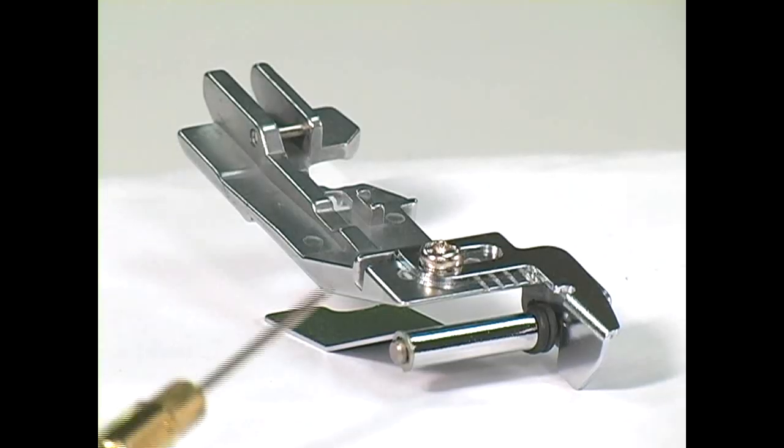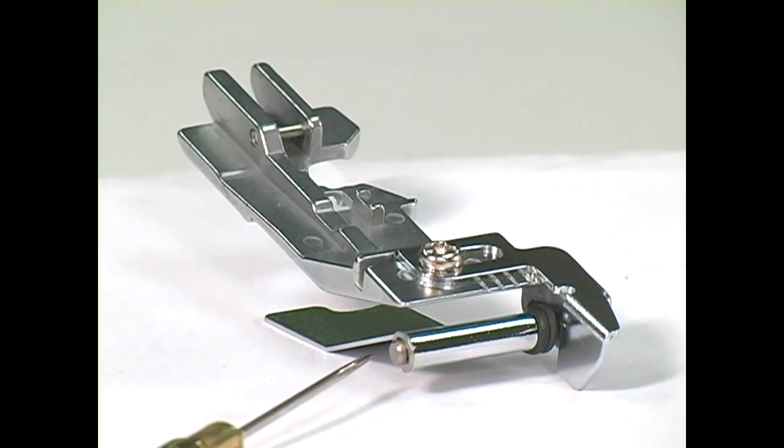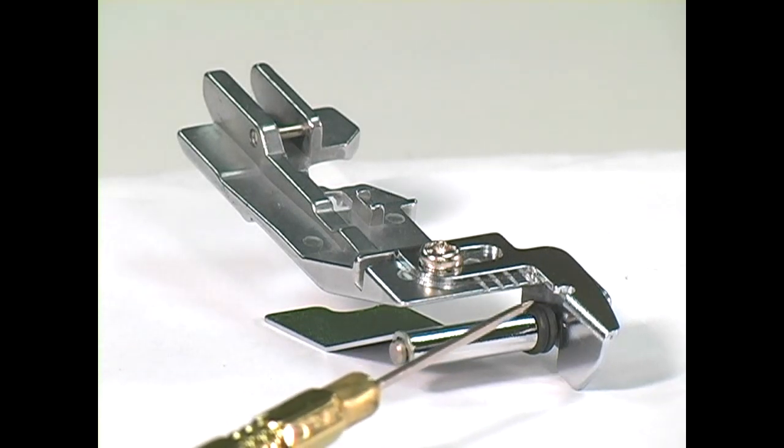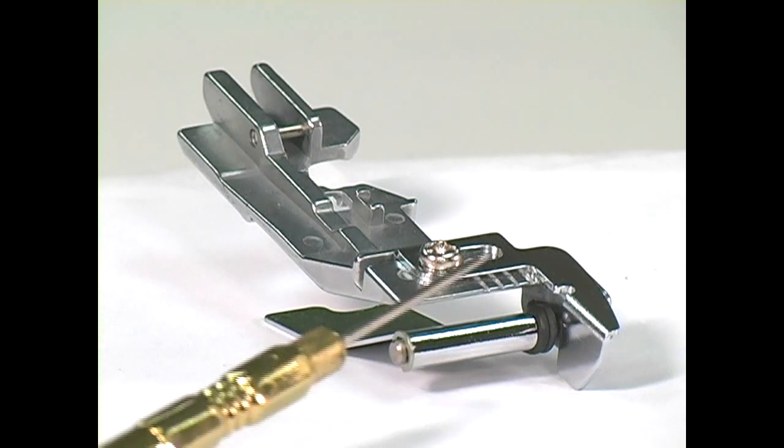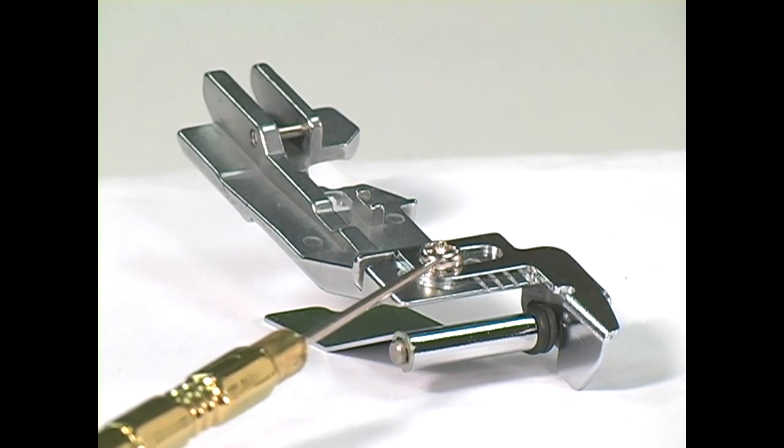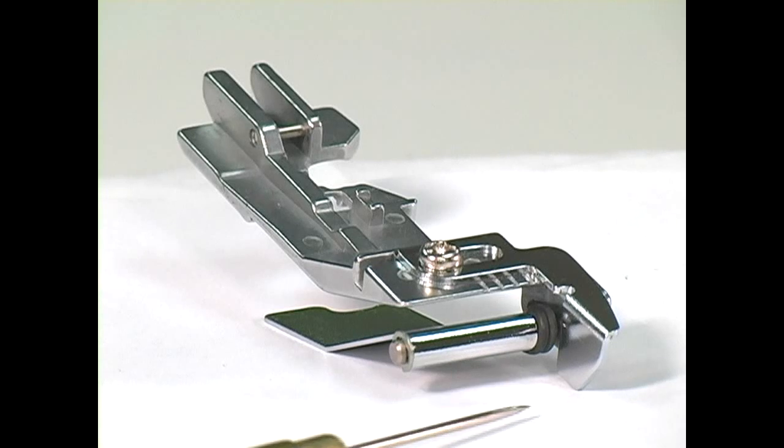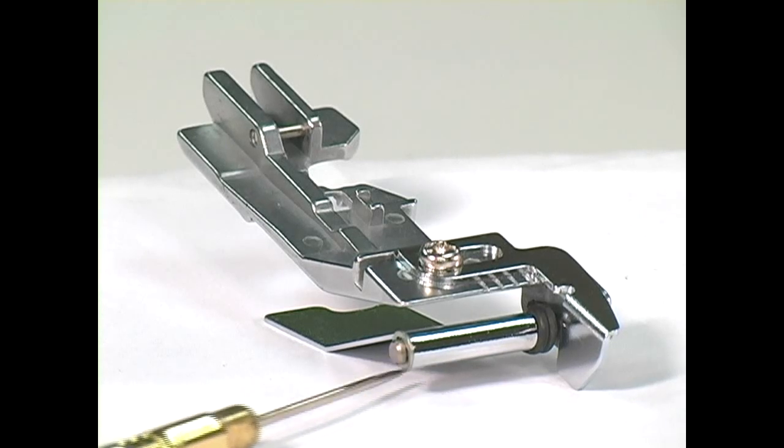The gathering flap on the underside of the foot separates the fabric layers for gathering and stitching to flat fabric in one pass. The adjustable guide on the side is helpful for aligning fabric edges. To adjust, loosen the screw and move the guide to the right or left as needed, then tighten the screw. To gather a single layer of fabric, place the fabric under the flap and stitch.